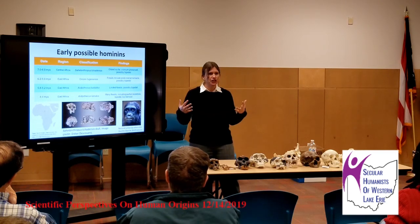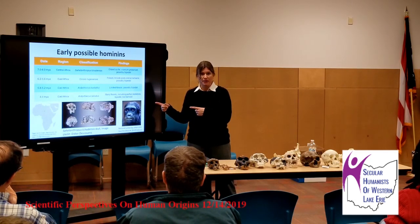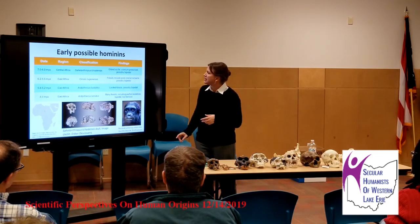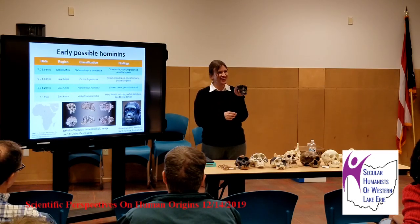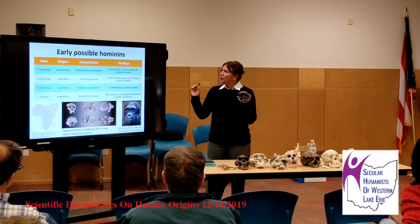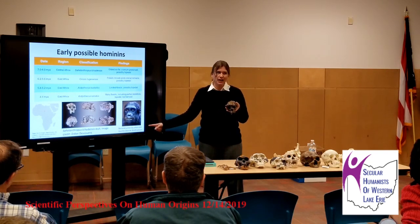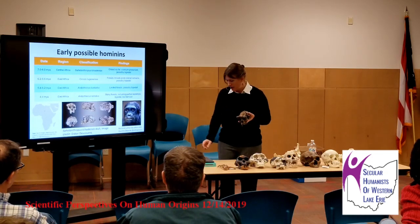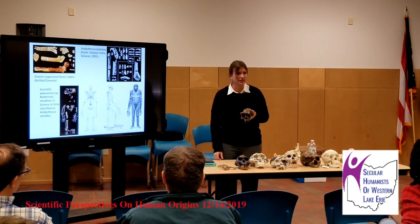Something interesting about these early possible hominins is the environments they were living in — all have been reconstructed as forested environments. Most people assume bipedalism is advantageous in open savanna environments, and that may be the case, but it looks like it may have evolved in a forested environment and then was refined in a more open or mixed environment. These earliest hominins — like Sahelanthropus tchadensis from Chad — are ape-like in many ways, with chimp-sized bodies and chimp-sized brains, cranial capacities in the 300s, and maybe four feet tall.